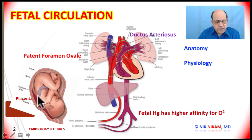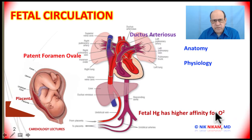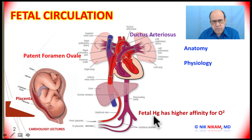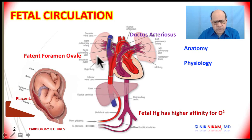Another important fact to remember is that fetal hemoglobin has a much higher affinity for oxygen compared to adult hemoglobin. As a result, fetal hemoglobin can extract oxygen from the mother's blood instead of being oxygenated in the alveoli in the lungs as in adult circulation.